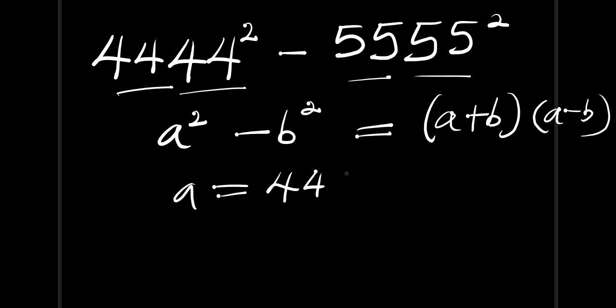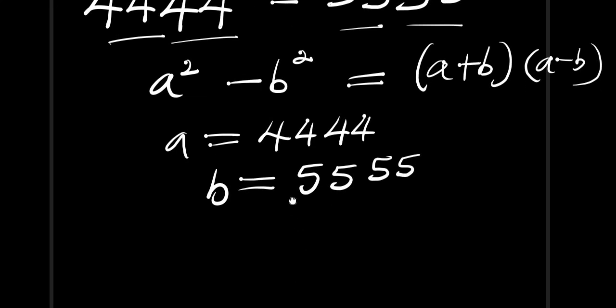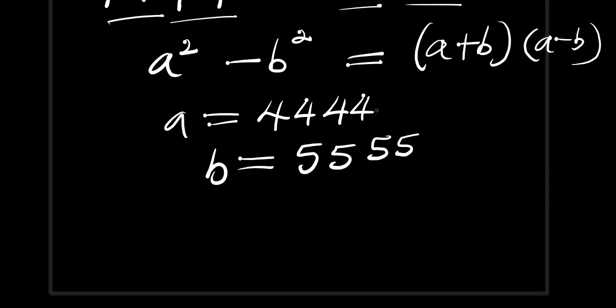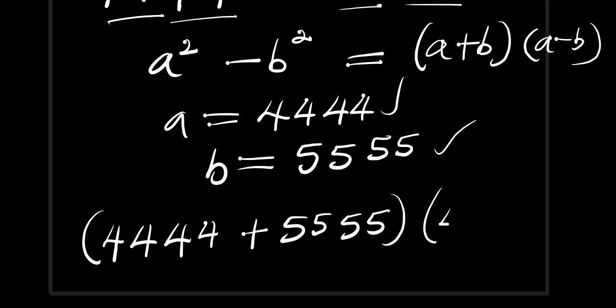And b equals 5555. So we will substitute a for this value and b we will substitute with this value. Let's do that. We are going to have (4444 + 5555) times (4444 - 5555).